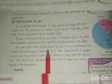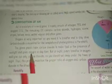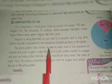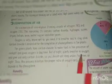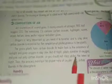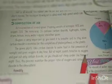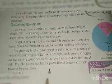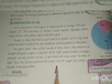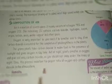Green plants take carbon dioxide to make food in the presence of sunlight and give out oxygen in the daytime. But at night, plants breathe in oxygen and give out carbon dioxide. This is why you should not sleep under trees at night. This process maintains the proper ratio of oxygen and carbon dioxide in the atmosphere.